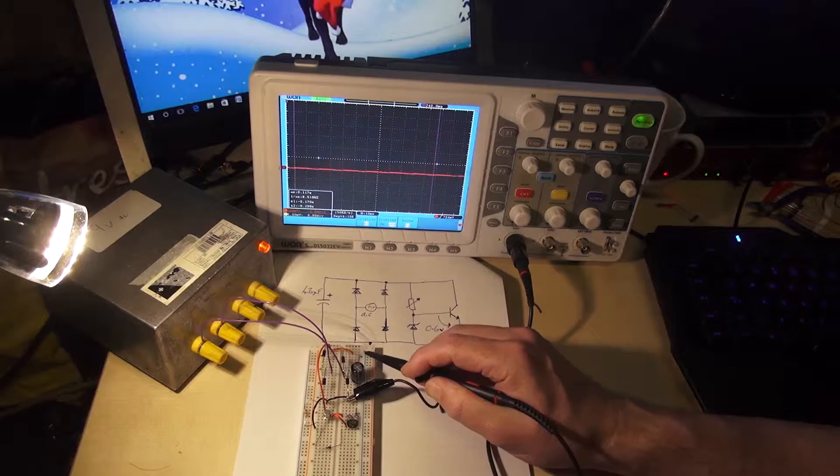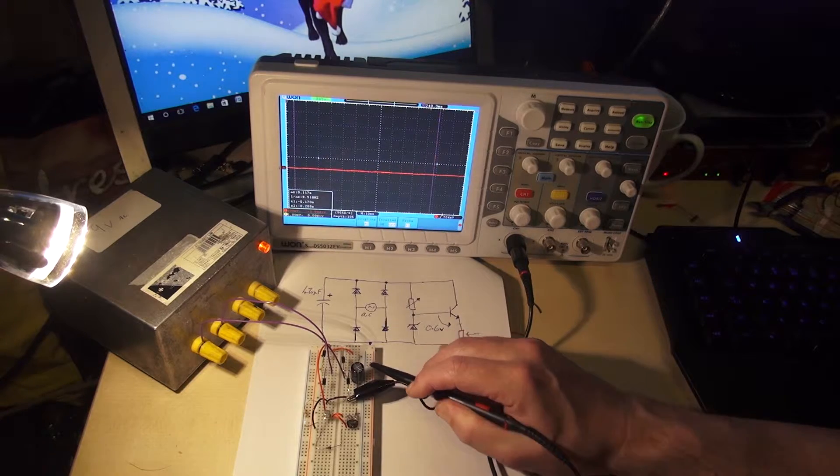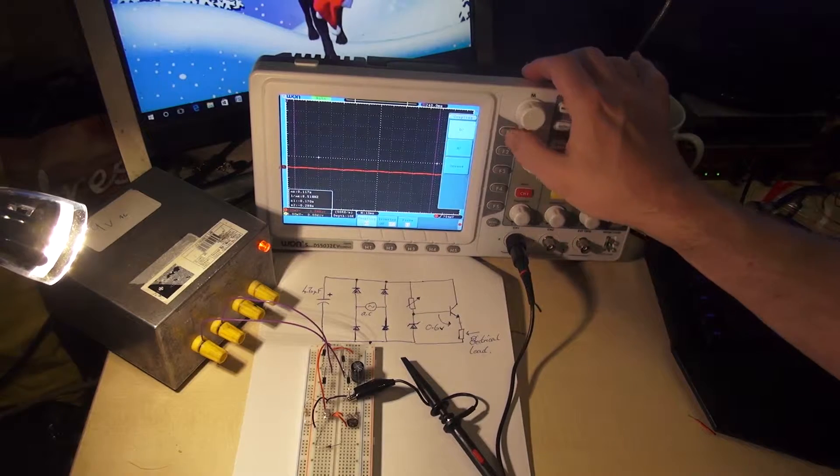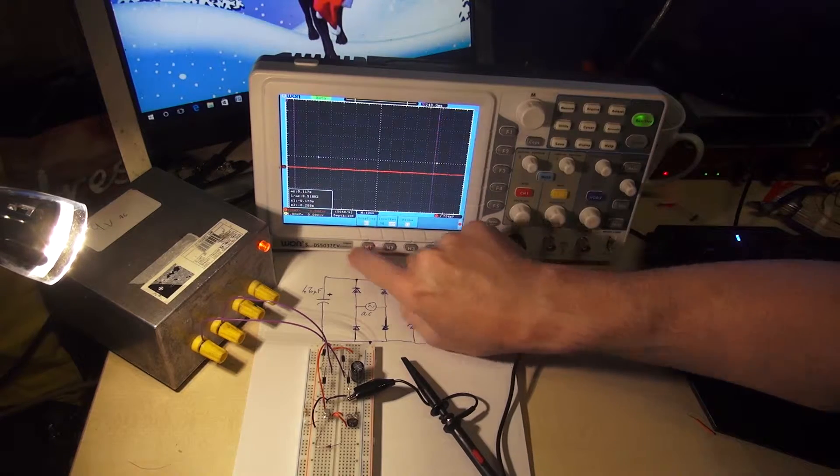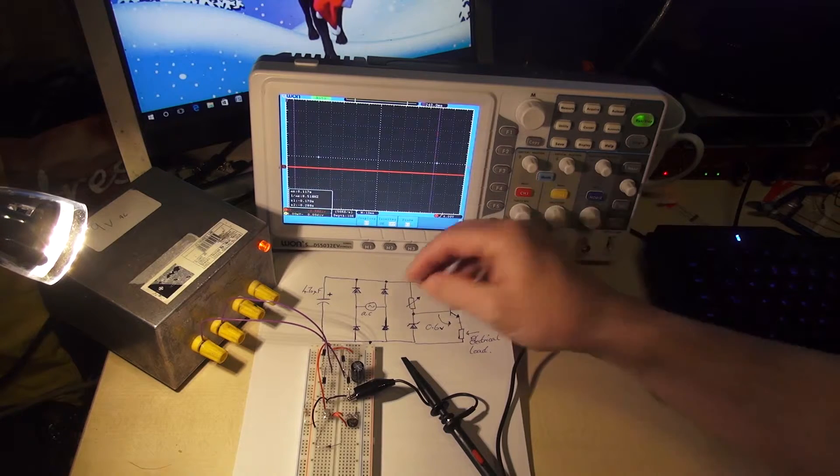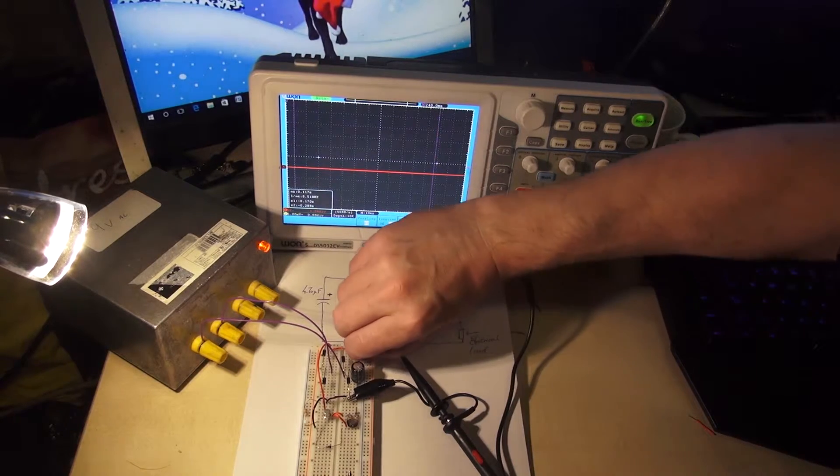If I was to remove the capacitor, we go back to DC again. Back to DC and change the volts per division. I'm just going to remove the capacitor from the equation here.